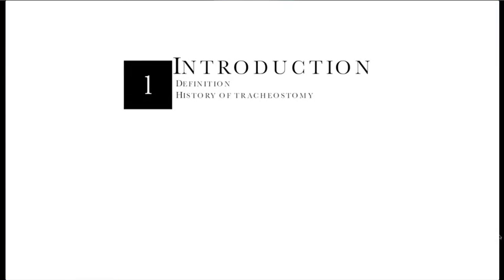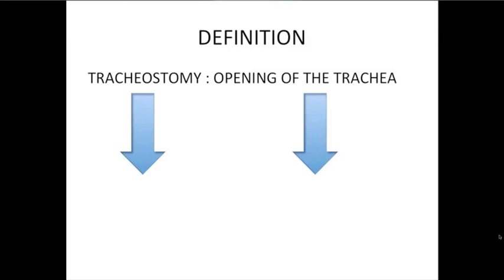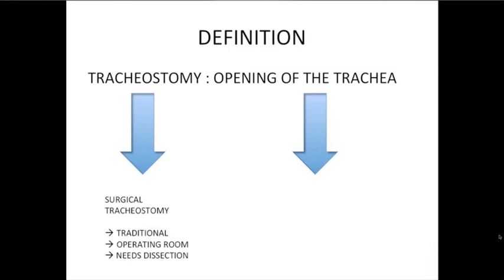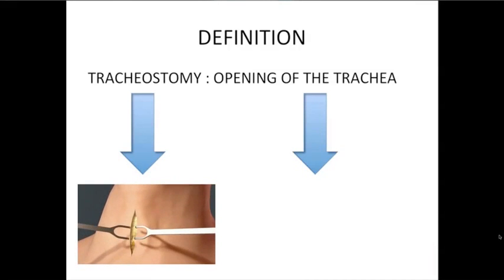In the introduction, we will see the definition and the history of tracheostomy. Tracheostomy is defined by the opening of the trachea. There are two main types of tracheostomy. The first type is the surgical tracheostomy, which is the traditional method usually done in an operating room.